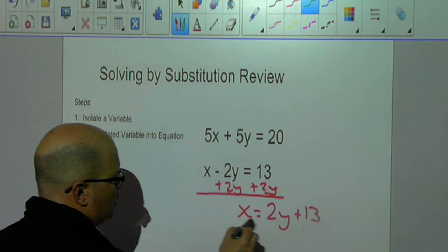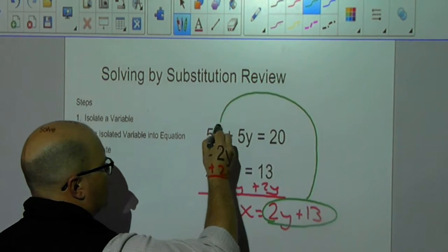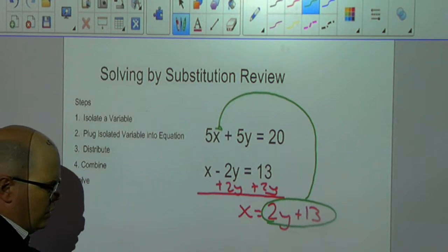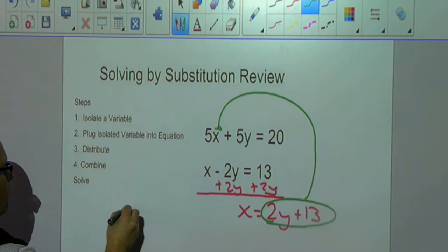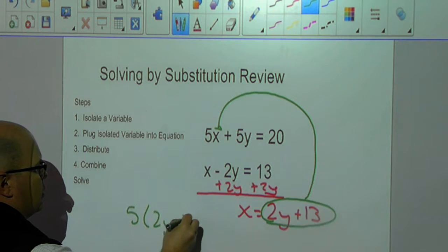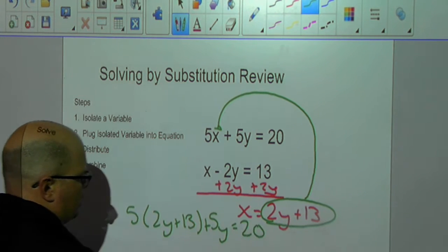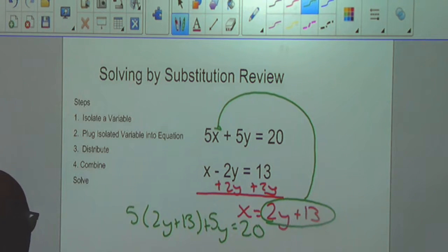I'm going to have 5 parentheses, 2y plus 13 plus 5y is equal to 20. Now that I've plugged it in, I'm going to distribute.